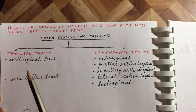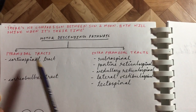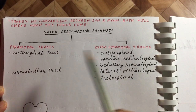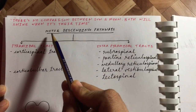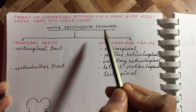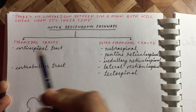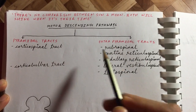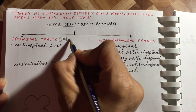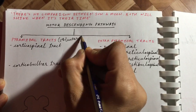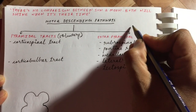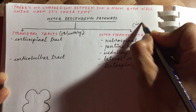Hello everyone, today we will be discussing pyramidal tracts and extra-pyramidal tracts. Both pyramidal tracts and extra-pyramidal tracts are part of motor descending pathways. The main difference between both is that pyramidal tracts control voluntary movements, while extra-pyramidal tracts control involuntary movements.